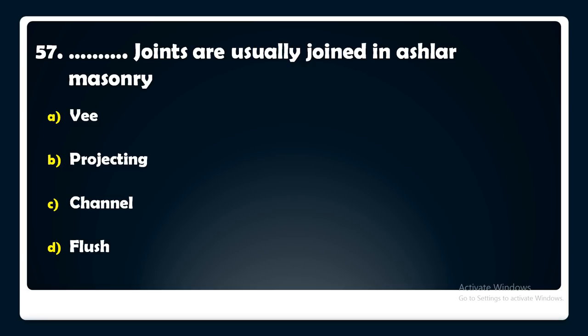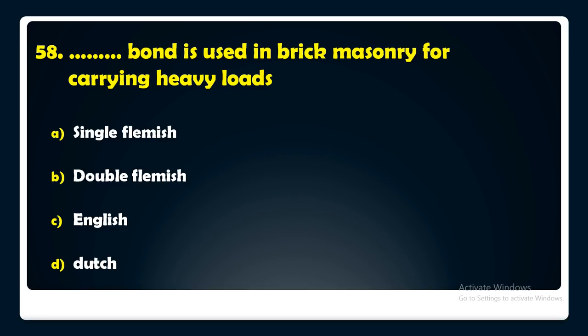Which bond is used in brick masonry for carrying heavy loads — Single Flemish, Double Flemish, English bond, or Dutch bond? The answer is: English bond is used in brick masonry for carrying heavy loads.